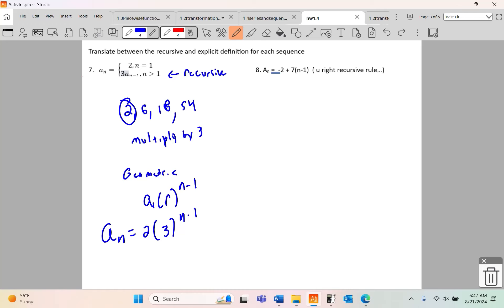Alright, so continuing where I left off yesterday, we're supposed to translate between the recursive and explicit definition. This is definitely explicit. It is straight to the point because if I wanted the 10th term, I would plug in 10. So what we're going to do is write a couple of terms out and see what the pattern is.